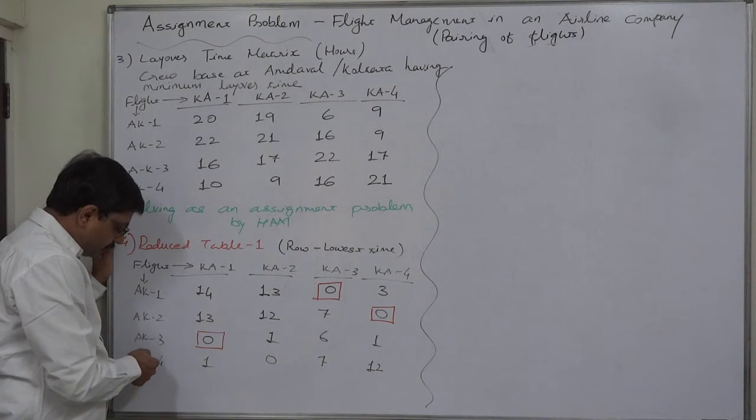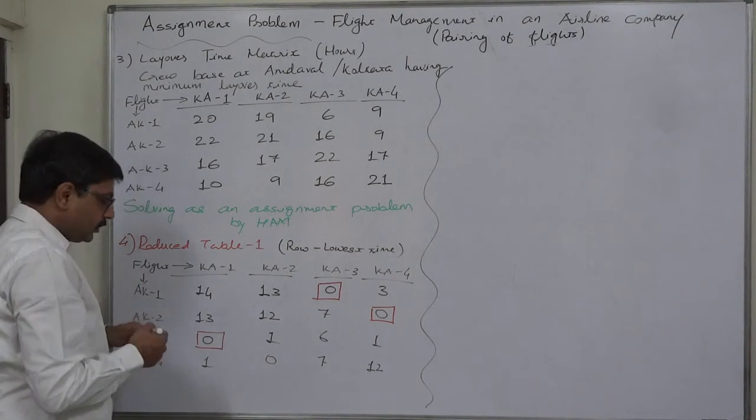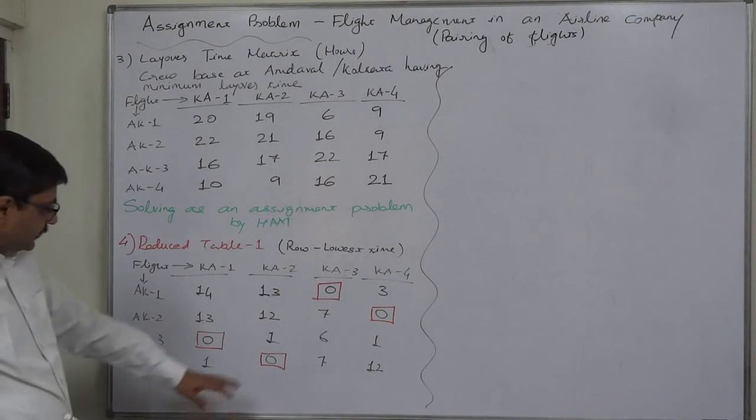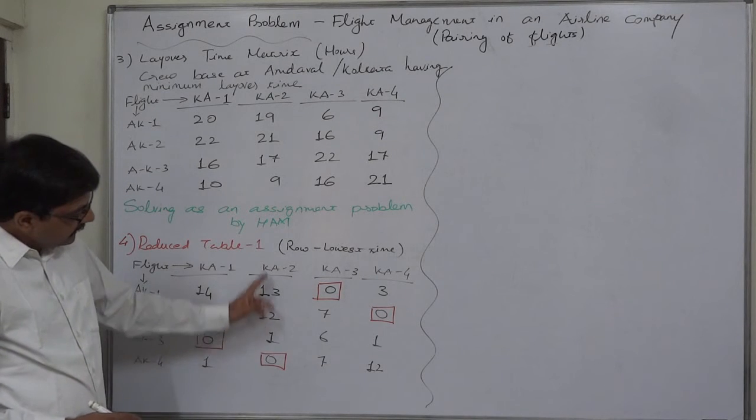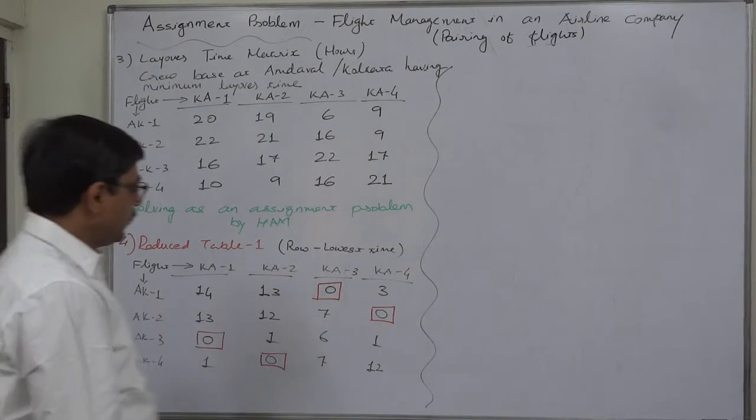Now we are going to check the fourth row. It is also with single 0 originally. So we can treat it as eligible for assignment. And is there any other 0 in the same column? No. If yes, cancel them.